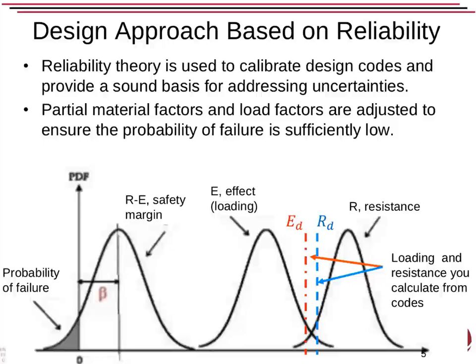What we do is based on reliability theory. Reliability theory is used to calibrate design codes and provide a sound basis for addressing uncertainties. Partial material factors and load factors are adjusted to ensure the probability of failure is low. Think about designing a column — there are a couple of things that vary.